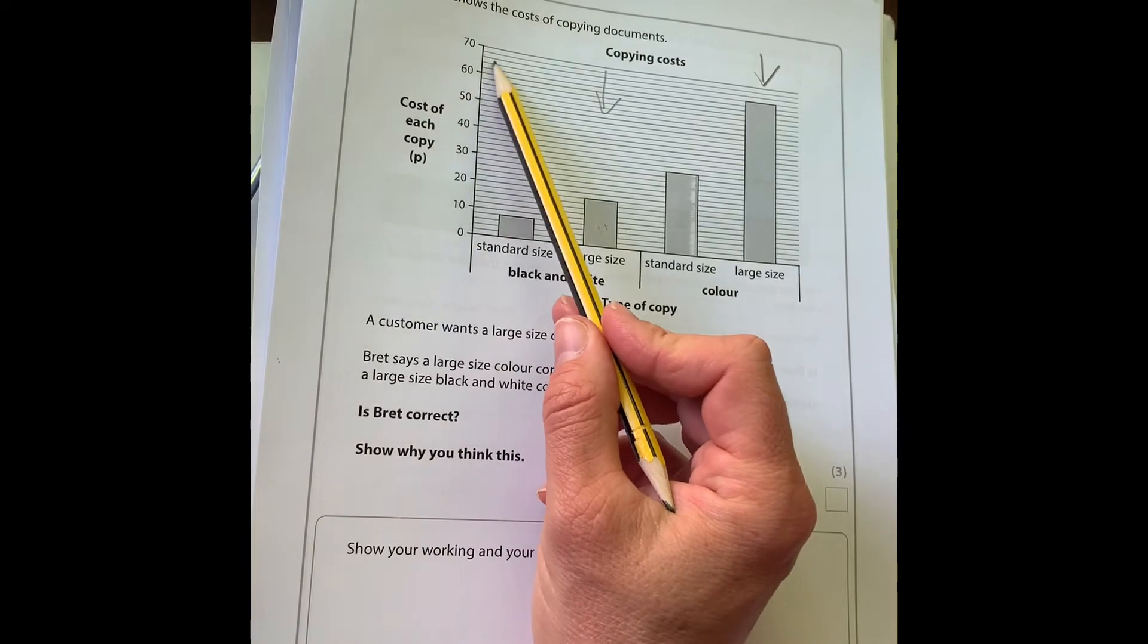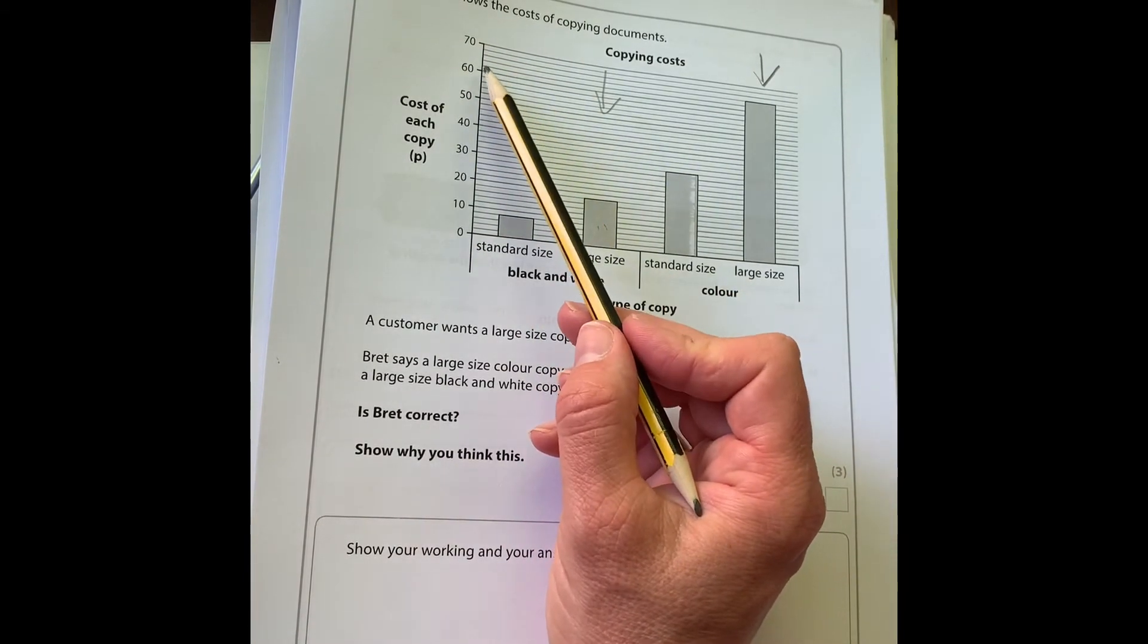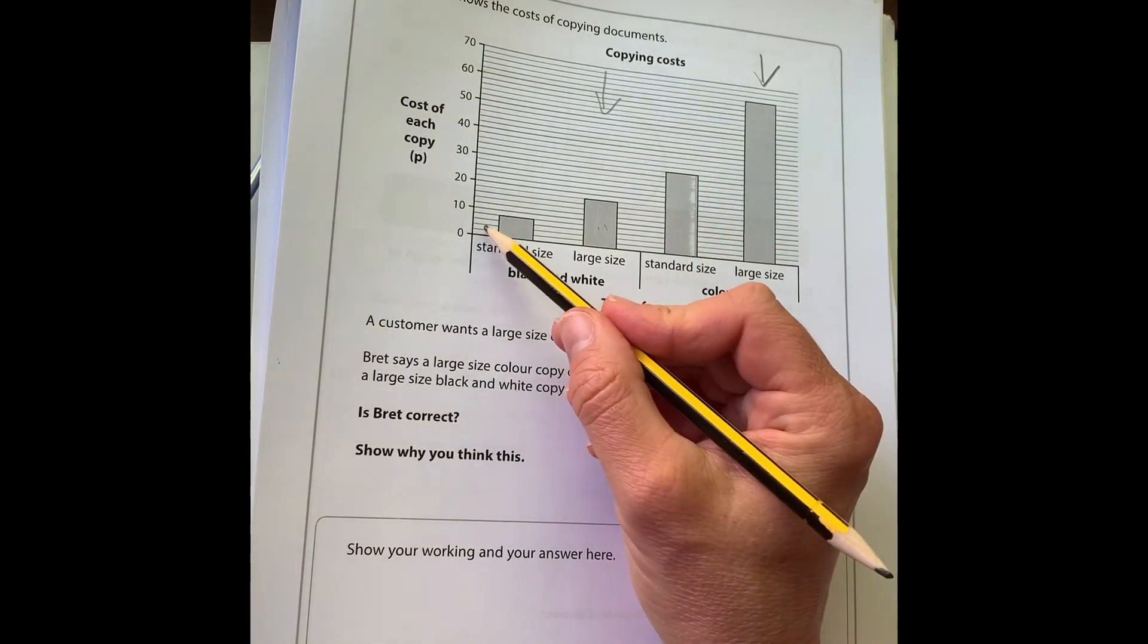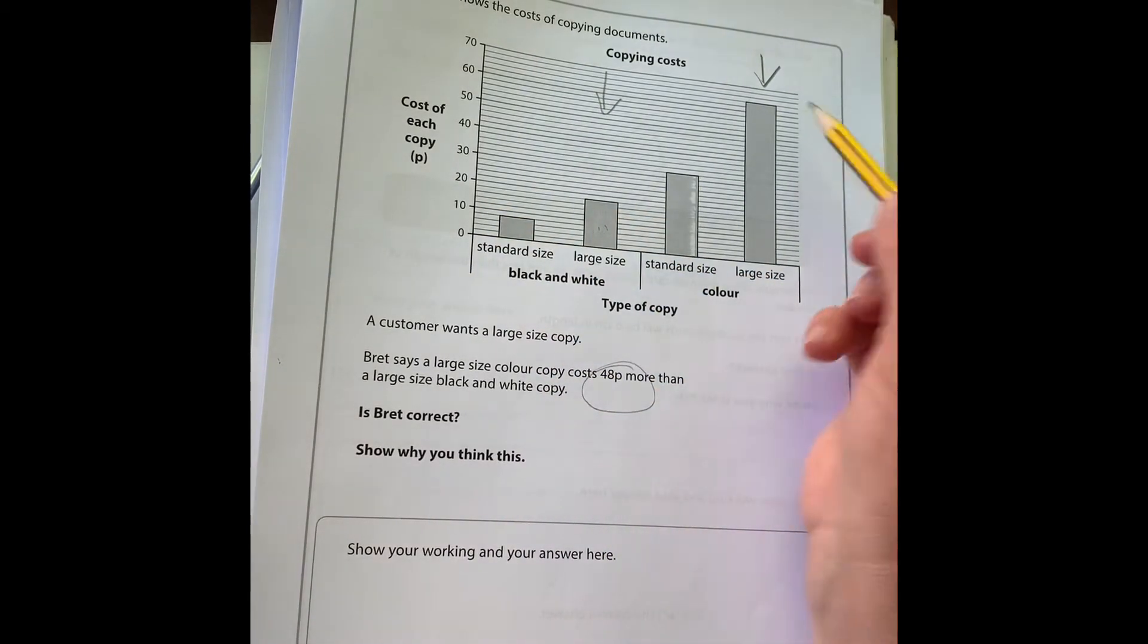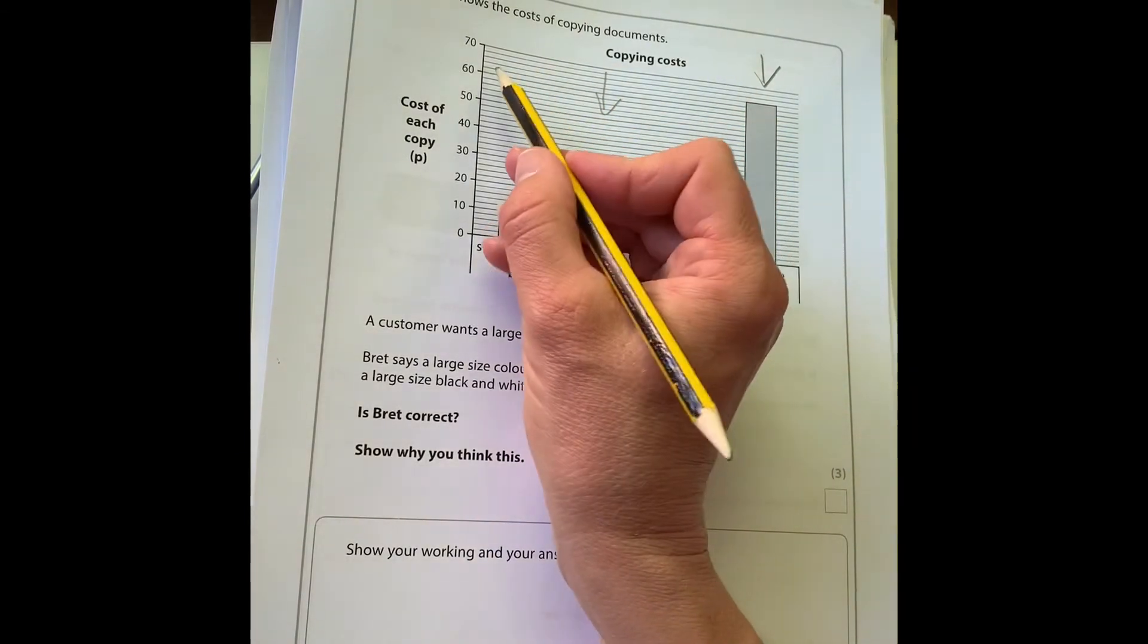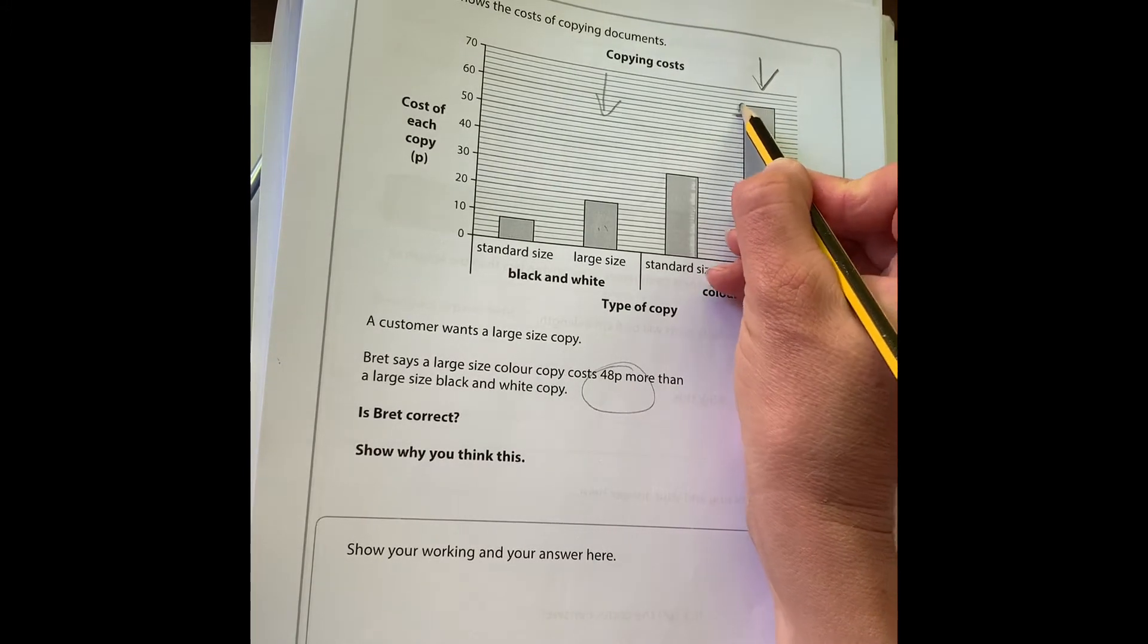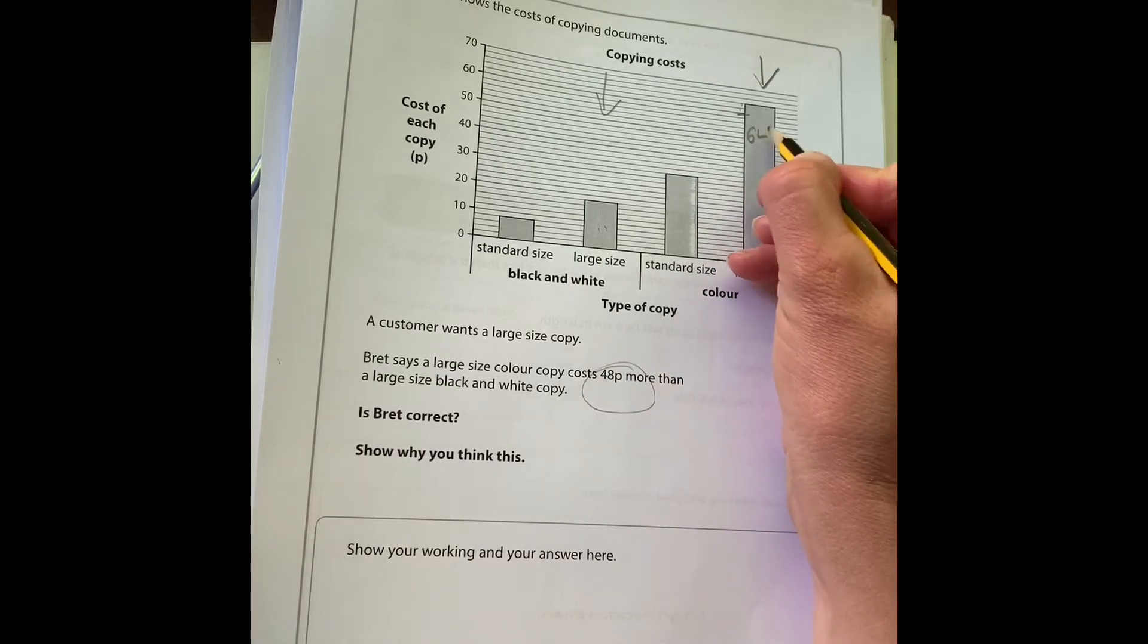We're trying to work out if the difference between them is 48p. First we need to work out what each of these lines is worth on our scale. From zero to ten there are five different lines, so each line is worth two. So we have 60 here, so 62, 64. The cost of this one is 64p.